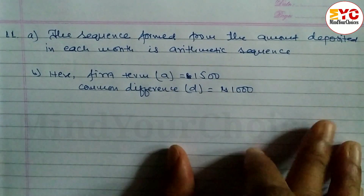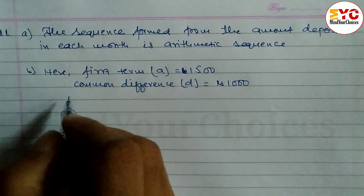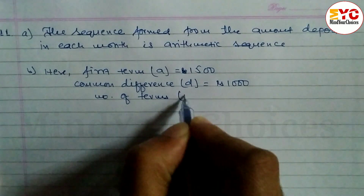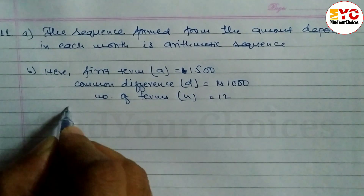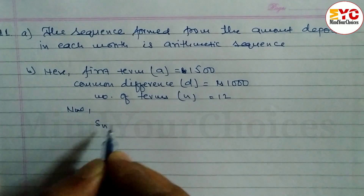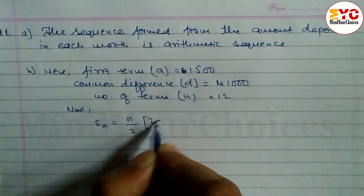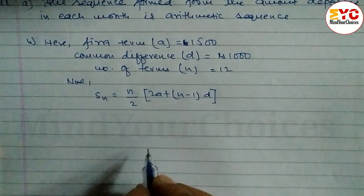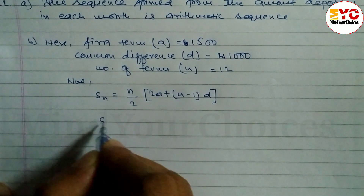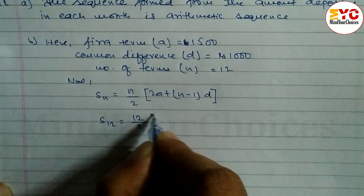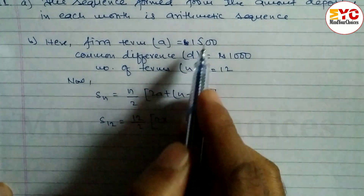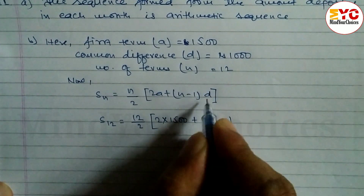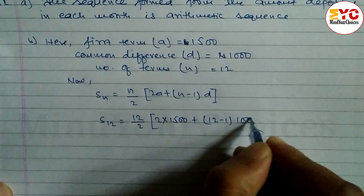Since the deposit increases each month, the number of terms n is equal to 12 (months in a year). Now we use the formula for Sn: Sn = n/2 × (2a + (n−1)d). Substituting n = 12, a = 1500, and d = 1000.